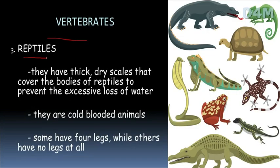The next vertebrate is reptiles. They have thick dry scales, which prevent excessive loss of water. These are cold-blooded animals. Some reptiles have four legs while others have no legs at all.